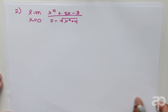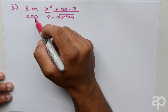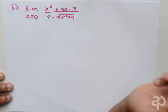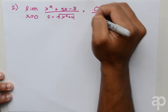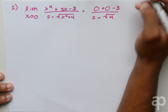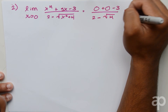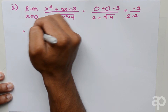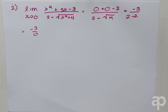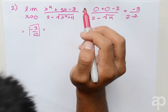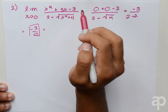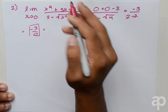Moving to the next problem, we substitute 0 for x to see whether we get 0 over 0. Doing that gives us 0 plus 0 minus 3 over 2 minus 4, which simplifies to negative 3 over 0. Since this is undefined rather than the indeterminate form, the limit of x to the fourth plus 3x minus 3 over 2 minus the square root of x squared plus 4 equals DNE.